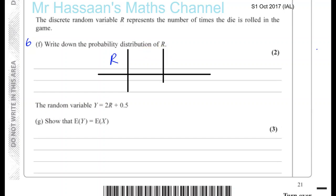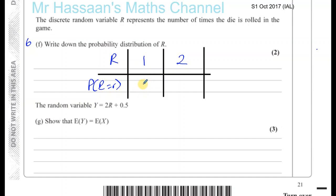There are two different possible numbers of throws of the dice: either 1 or 2. The probability that R equals 1 is if you get a 2, 3, or 4 on the first throw, because you just get that score. So that's 3 quarters. The probability of being thrown twice is if you get a 1 on the dice and have to throw again, so that probability is a quarter. That's your answer for part F.